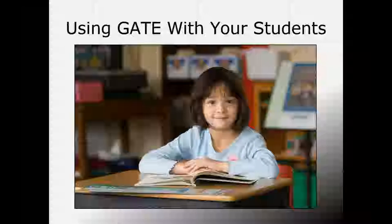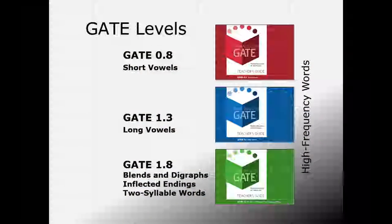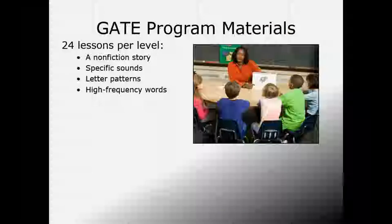Now let's take a deeper look at how to use the GATE program. GATE is available in three separate levels, each with 24 lessons, and each lesson is about a non-fiction topic. The first level is 0.8, focusing on short vowels. The middle level is 1.3, which focuses on long vowels. Level 1.8 focuses on blends and digraphs, inflected endings, and two-syllable words. Regular and irregular high-frequency words are emphasized in all three levels.